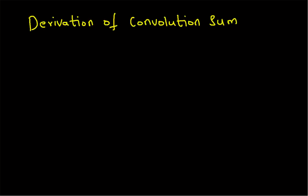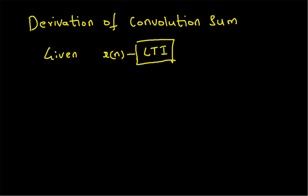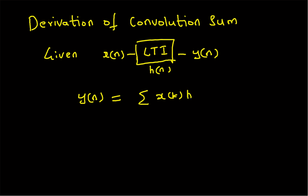Hello, welcome. In this video we will look at the derivation of the convolution sum. Given an LTI system with input x(n) that goes through an LTI system with impulse response h(n), the output is given by y(n). We want to prove that the output y(n) is equal to the convolution between the input x(n) and the impulse response h(n), the unit sample response.